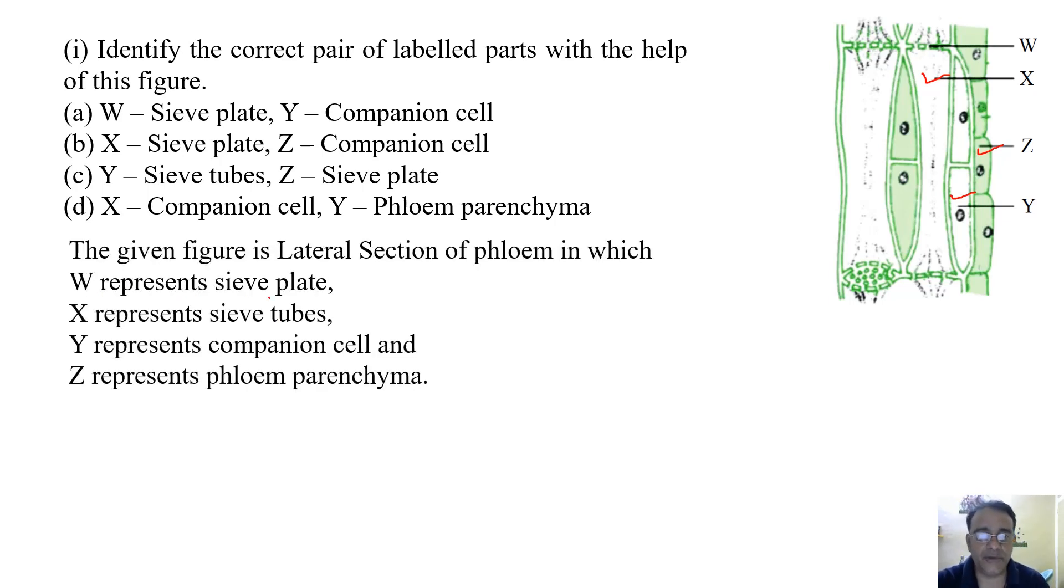So W represents sieve plates, X represents sieve tubes, and Y represents companion cell, and Z represents phloem parenchyma. So here option A is the correct option.